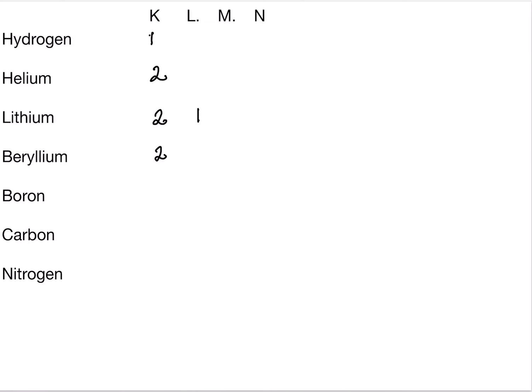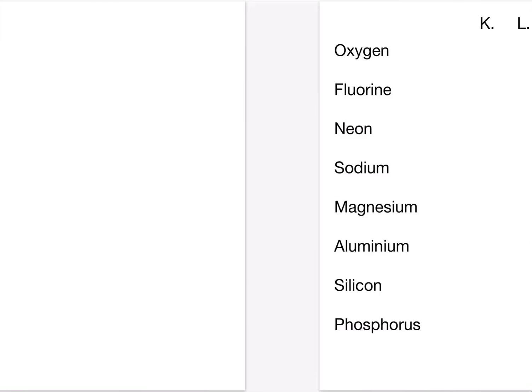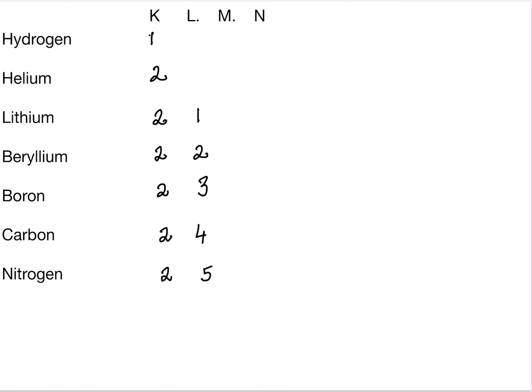Beryllium has an atomic number of 4, so 2 electrons in the first shell and 2 electrons in the second shell. Boron has an atomic number of 5, so 2 electrons in the first shell and 3 in the second — that's 5. Carbon has an atomic number of 6, so 2 electrons in the first shell and 4 in the second L shell. Nitrogen has an atomic number of 7, so 2 electrons in the K shell and 5 in the L shell.